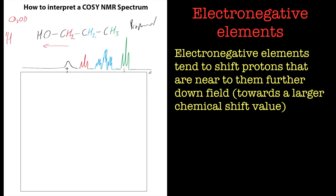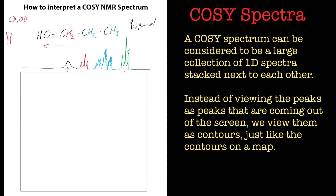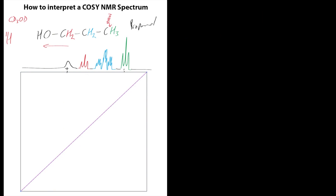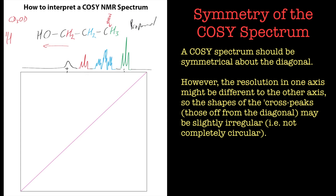Now if you do a two-dimensional spectrum, what are you actually doing? The best way to look at it is to imagine it as a series of one-dimensional spectra. You've got the one-dimensional spectrum at the top, but imagine we do one experiment where we irradiate just this position here — only this one — and anything that this one is connected to should feel that radiation. We put a zigzag line there to see what those hydrogens are connected to, and I'll draw a symmetry line all the way down — I'll explain that in a second.